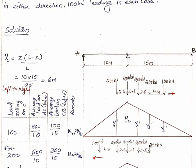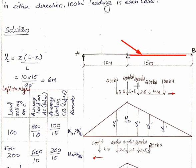For the first case, we calculate the average loads. The 100 kN load: 100 divided by span length AC (10m) gives the average load on AC. The remaining loads 200+200+200+200 = 800 kN divided by span CB (15m) gives the average load on CB.